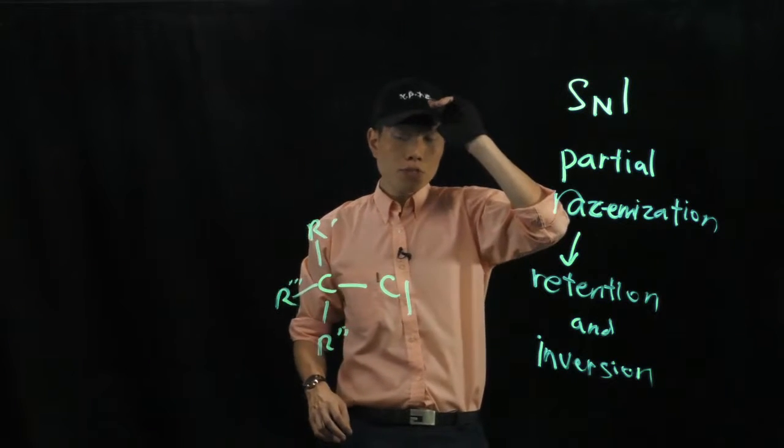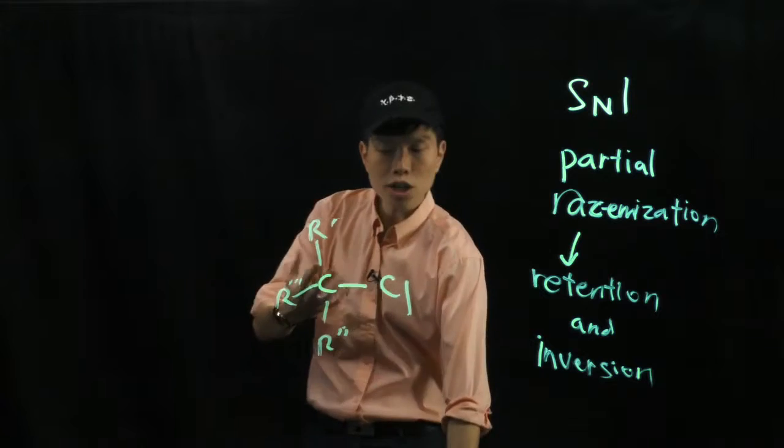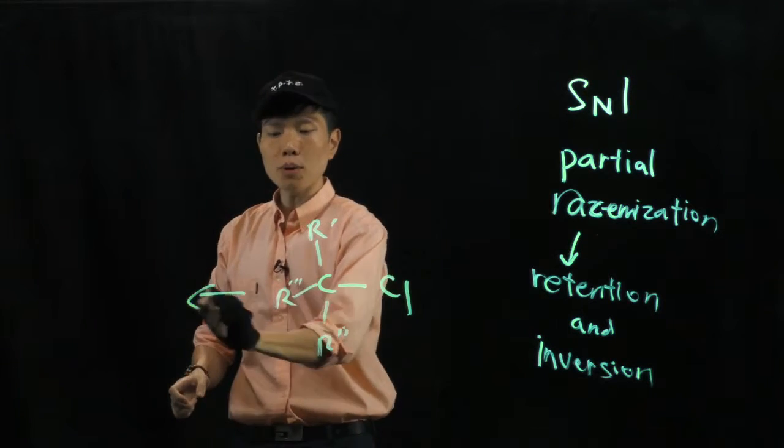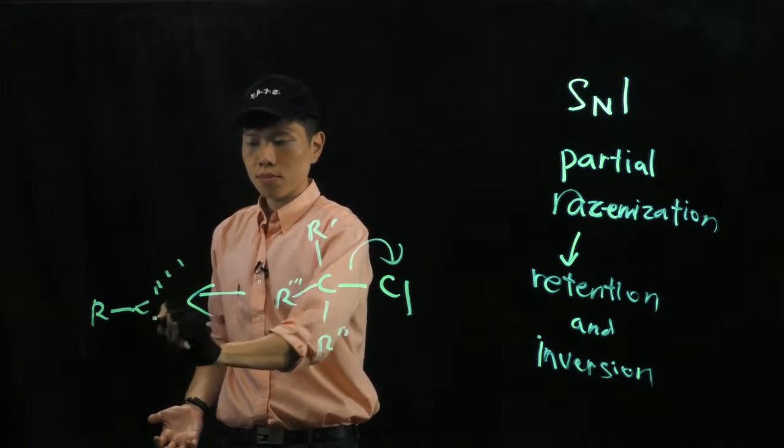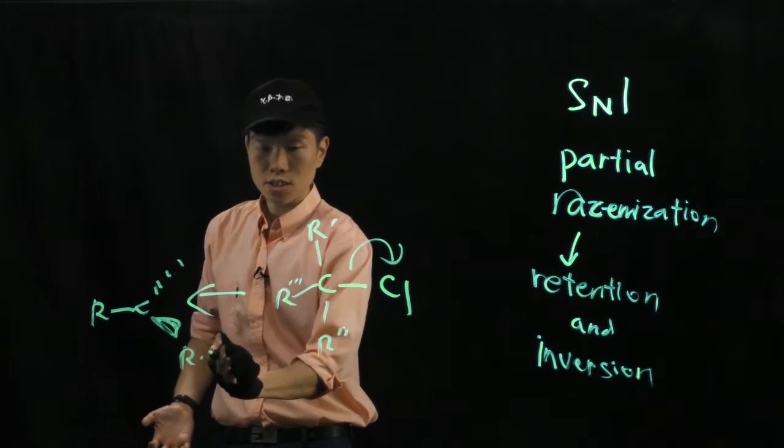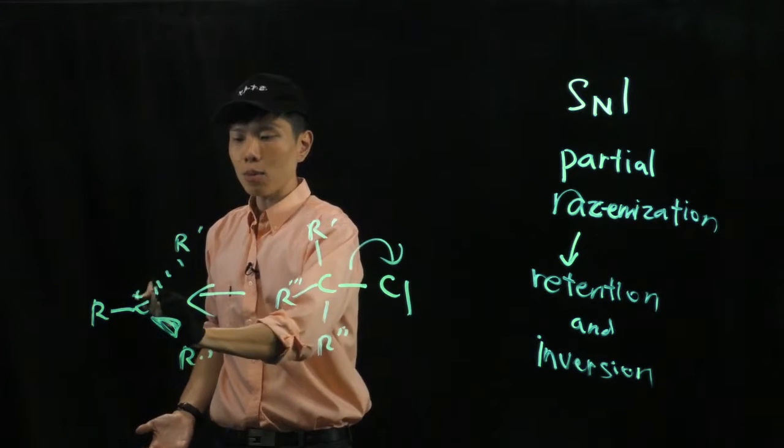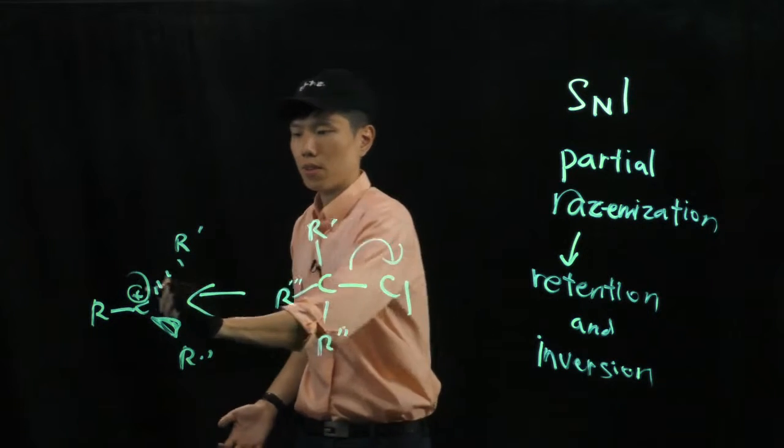So after I remove this cap, what happens is I'm trying to simulate the formation of a carbocation where this leaving group has gone, and then we have a trigonal planar structure, a carbocation here, C+.